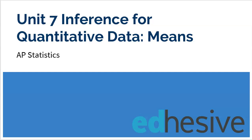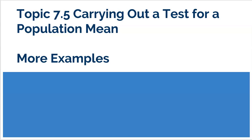Welcome to Unit 7, Inference for Quantitative Data with an emphasis on means. This video covers Topic 7.5, Carrying out a Test for a Population Mean. We're going to look at more examples, because the more examples you see of this, the easier it'll be to understand all the different parts and pieces. Some problems give you the actual data and you have to find the mean and standard deviation, while others will save you time and provide those values.